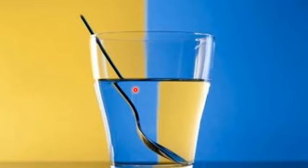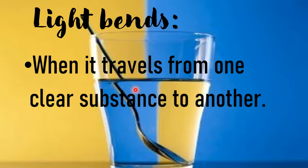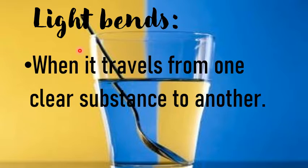Light bends when it travels from one clear substance to another. You can see the light rays were falling on the surface of glass. When it gets inside the water, its speed slows down and it can bend the direction. As a result, the spoon — or anything else like a pencil in the water — looks different. So light bends when it travels from one clear substance to another.